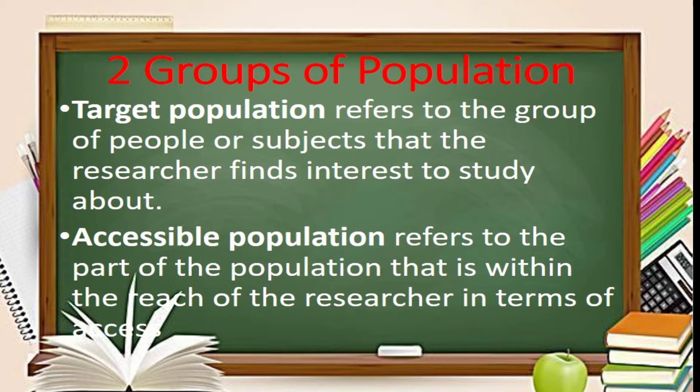For example, in a study about the common difficulties encountered by senior high school students in their first semester of the school year 2016–2017, the target population may be all the senior high school students in Metro Manila. However, the researcher may have access only to the students of a specific school. These students comprise the accessible population. Researchers commonly select samples rather than the entire population due to constraints in budget, time, and manpower.